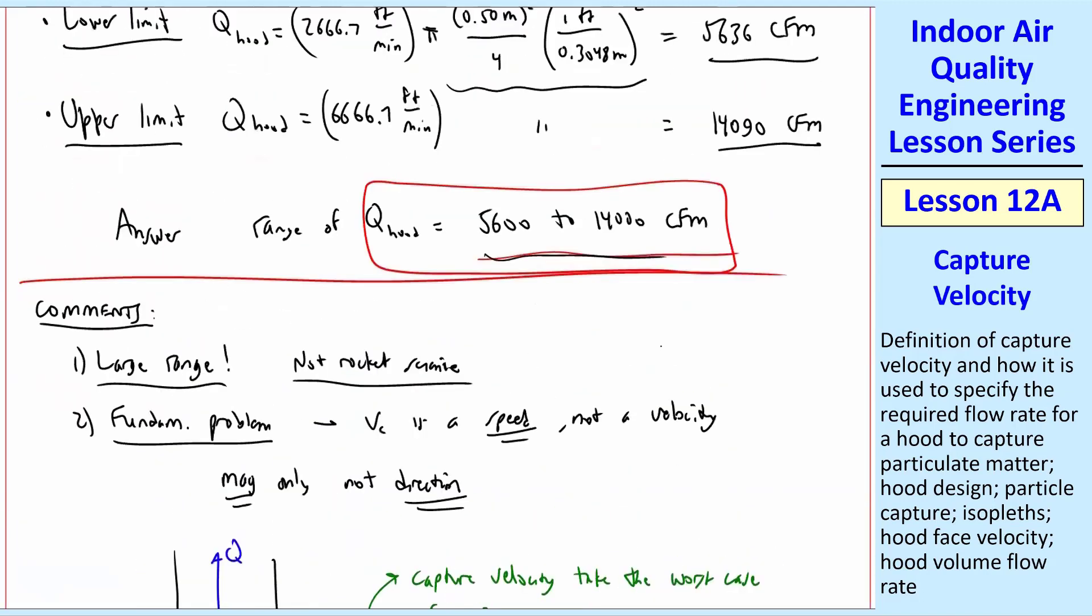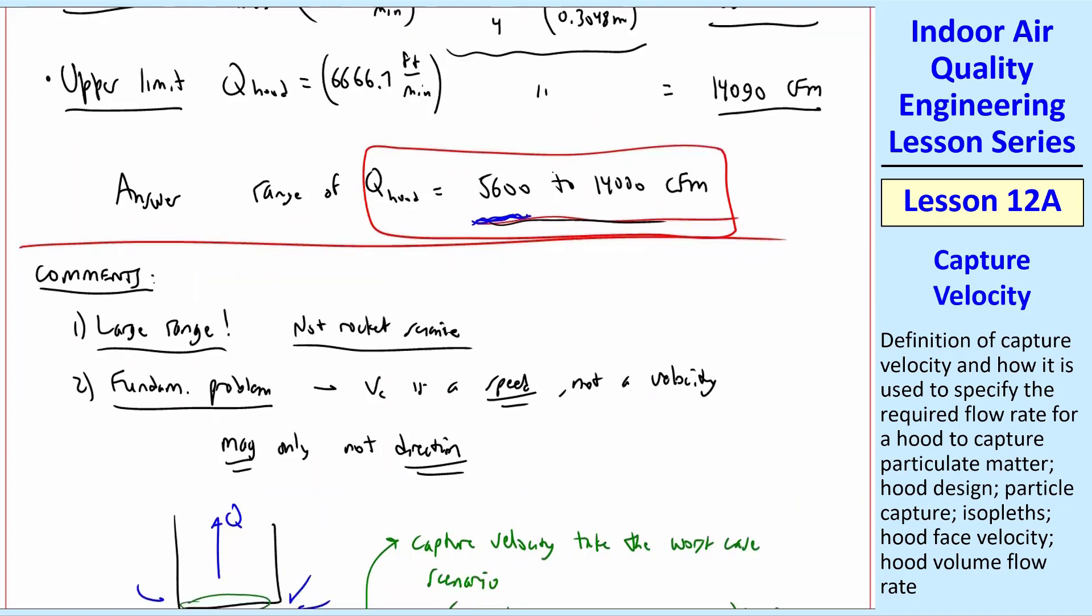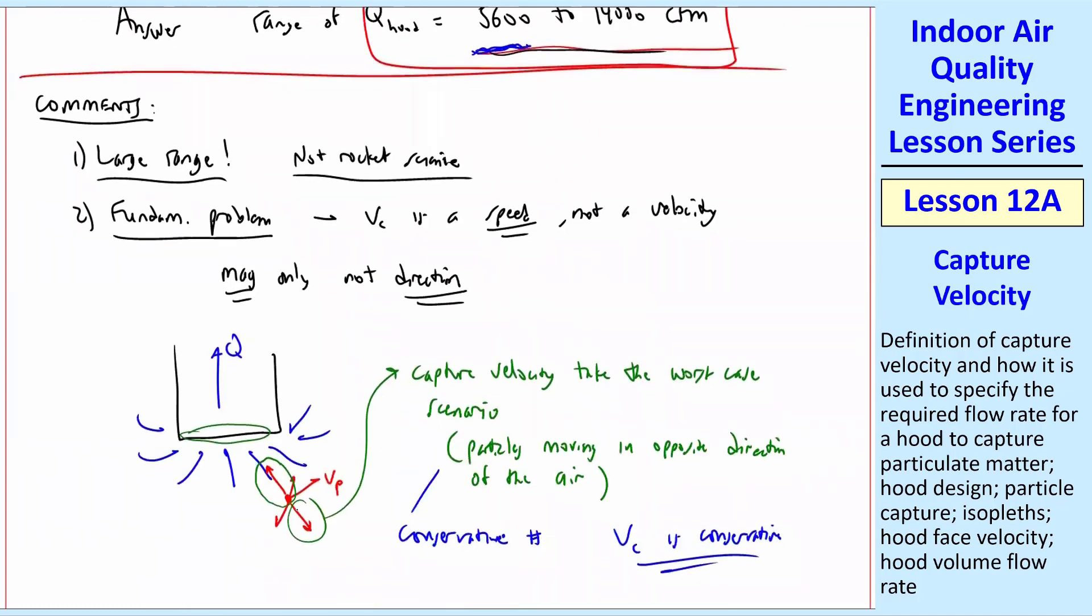So in other words, it's particles moving in the opposite direction of the air coming into the hood. So this is a conservative number. So VC is a conservative value. We're saying in this case, you had nice room conditions and low toxicity, you would say 5,600 CFM. That's only for a particle that happens to be moving away in the exact opposite direction of the flow. It may not be if you're painting or welding or something. You may have particles flying around. It may not always be going away, obviously.